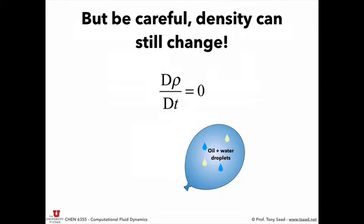An incompressible flow only means that div U is zero, which implies that the material derivative d(rho)/dt plus U dot grad(rho) equals zero — but neither term is necessarily zero individually. You will often hear the term multiphase incompressible flow in CFD. If you're doing a flow with oil and water in an emulsification process, your condition is div U equals zero, but the density is not constant — you have a density for water and a density for oil.